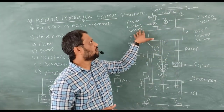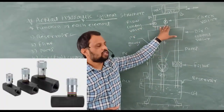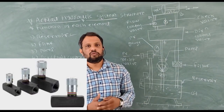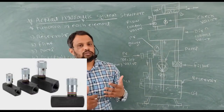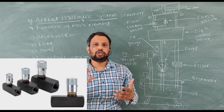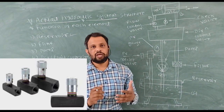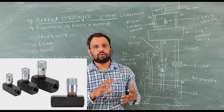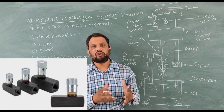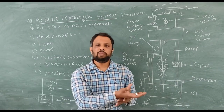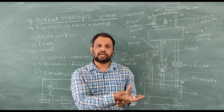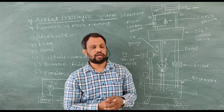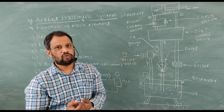After that, the flow control valve and check valve. The flow control valve decides your actuator speed. Depending upon the opening of the flow control valve, more oil or less oil will enter into the cylinder. The check valve is a one-way valve.